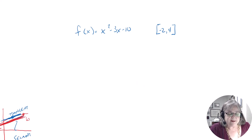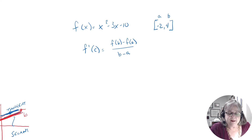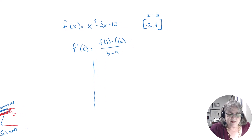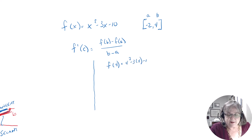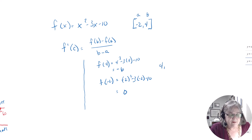...and the interval is between negative 2 and 4, then what we're trying to find out is f prime of c — if we can find c — that would make this f of b minus f of a over b minus a, where negative 2 is a and 4 is b. I'm going to divide my paper in half. On the right side, let's think algebra. So I need to find f of 4. f of 4 is 4 squared minus 3 times 4 minus 10, which turns out to be negative 6. And f of negative 2 is negative 2 squared minus 3 times negative 2 minus 10, which turns out to be 0.